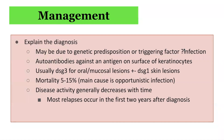In terms of management, the initial step is to explain the diagnosis — that Pemphigus vulgaris may be due to a genetic predisposition or triggering factor that is unclear but could be infective in nature. The underlying pathophysiology involves autoantibodies against Desmoglein 3 for oral and mucosal lesions, and Desmoglein 1 for skin lesions. Associated mortality ranges from 5 to 15% with the main cause being opportunistic infections, and disease activity generally decreases with time.